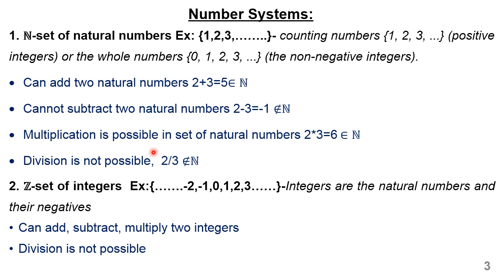Multiplication is possible because when we multiply two natural numbers — for example, two and three — I get the result as six, and six is a member of the set of natural numbers N. But division is not possible because when I divide, I get a fractional value sometimes. For example, two divided by three gives 0.666, which is not a member of N.